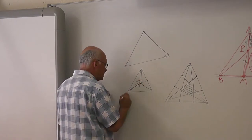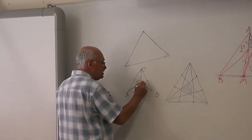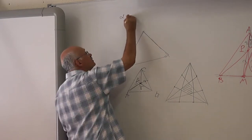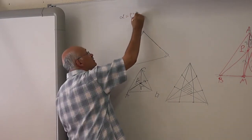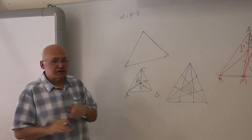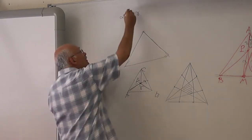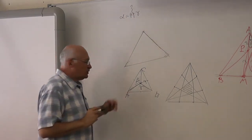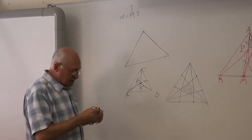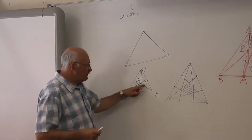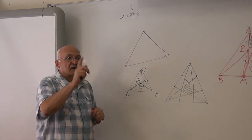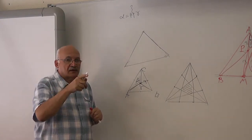Let's denote these areas for triangle ABC as alpha, beta, and gamma together. So alpha equal to beta equal to gamma is what we need. Let's simplify by forgetting one equation — just alpha equal to beta. What would be the set of points for which alpha is equal to beta, where the regions are equal?